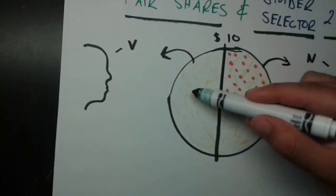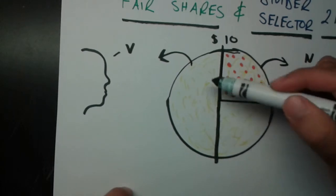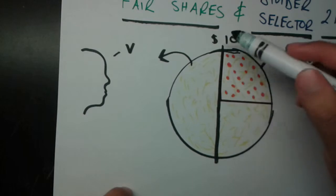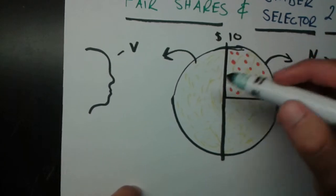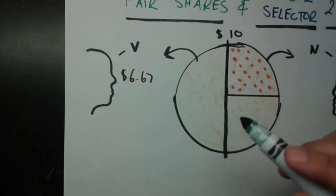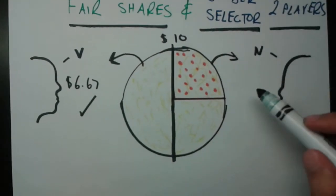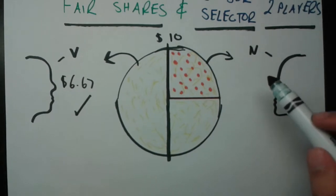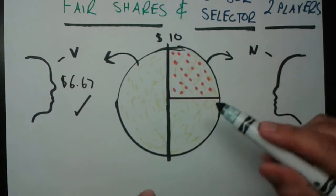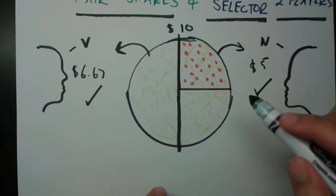Now, this person, since this is half of the whole pizza, and it is two-thirds of the cheese portion of the pizza, it's worth two-thirds of $10 for him. And two-thirds of $10 is $6.67 about. He's getting more than $5, so he is definitely getting a fair share.